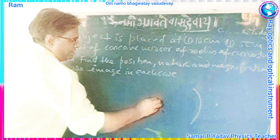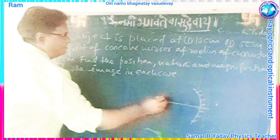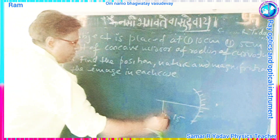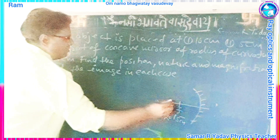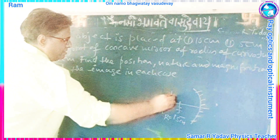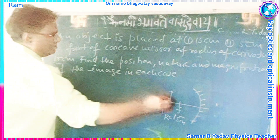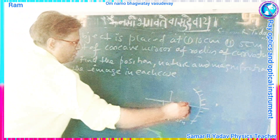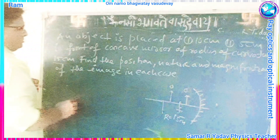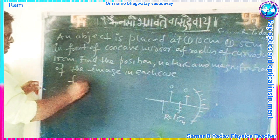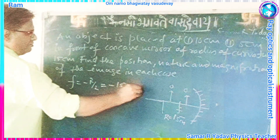You can see here, this is a concave mirror and the radius of curvature is given as R = 15 cm. F will be half of R. Using sign convention, F is equal to minus R upon 2, which gives minus 15 upon 2, equal to minus 7.5 cm.